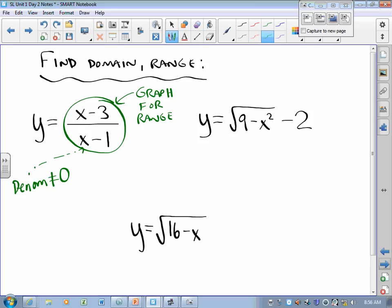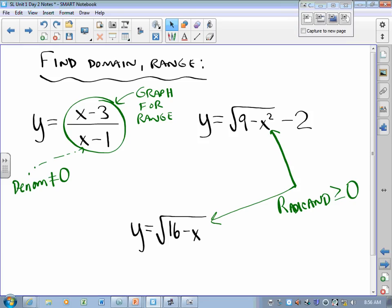Also: y = √(9-x²) - 2, and y = √(16-x). I picked two radical functions because when you have a radical, the radicand—what's underneath—must be non-negative. In each case, we can find domain algebraically by setting the radicand ≥ 0, then doing algebra from there.